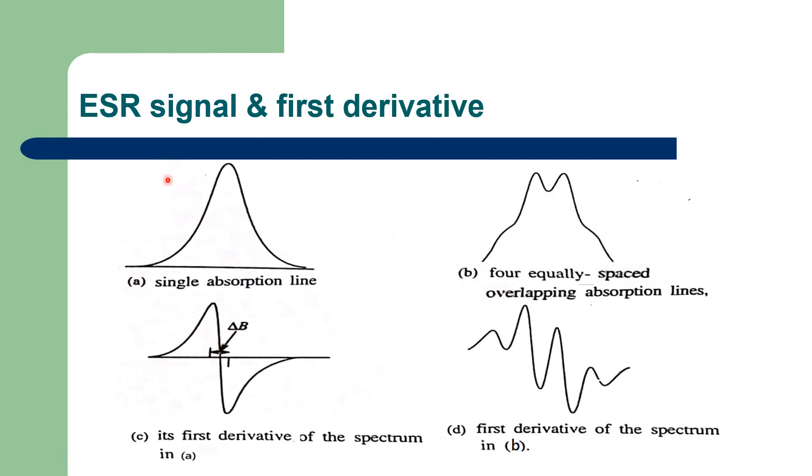The ESR signal with a single absorption line is shown in this figure and its first derivative will be like this. If there are four equally spaced overlapping absorption lines, it will be like this. And if we take the first derivative, it will be as shown in figure D.